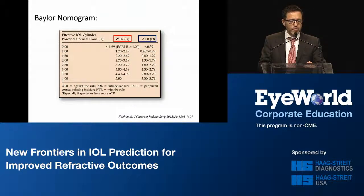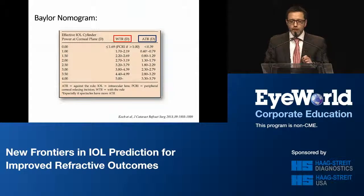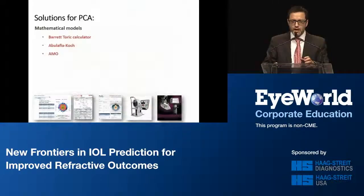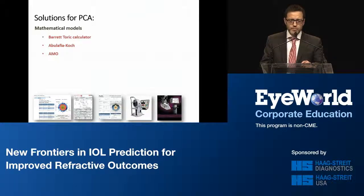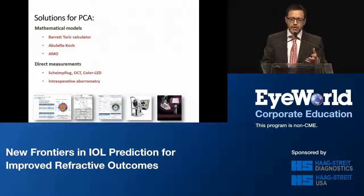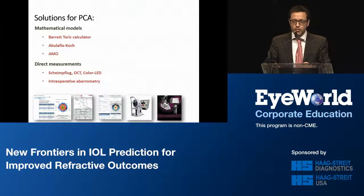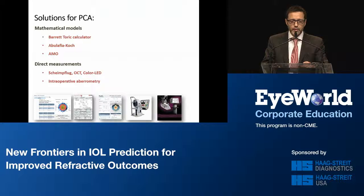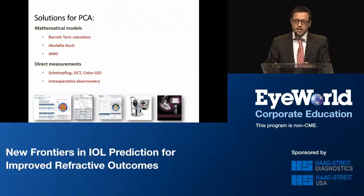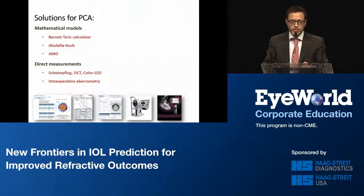Since then, a great deal of work has been done to refine our understanding of posterior corneal astigmatism and to find more accurate ways to incorporate it into daily toric calculations. Two main paths have been taken: one is mathematical models that use anterior corneal-based measurements to calculate the net corneal astigmatism, and the other is direct measurements of the posterior cornea. Unfortunately, as of today, direct measurements of the posterior cornea are not as accurate as the best mathematical models, which serve as a stopgap until better devices become available.